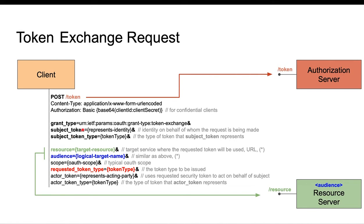So if the subject token is, for example, a SAML token — or in OAuth terms a refresh token — the requested token type could be an access token. This is one parameter used with all kinds of token types that exist. And then we have an actor token and actor token type, which are meant for a scenario where a relying party is going to act on behalf of or impersonate a subject.